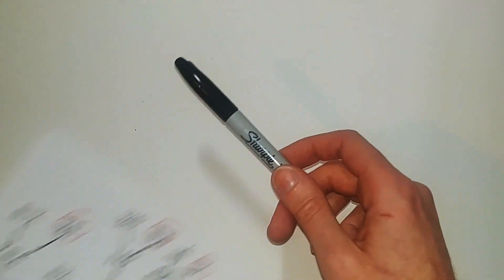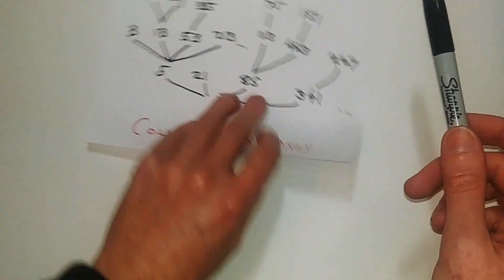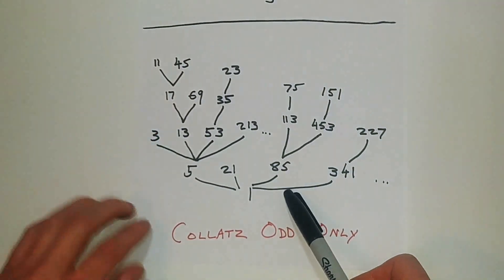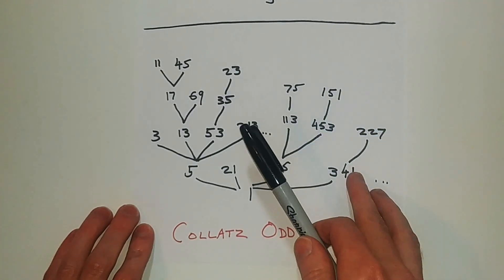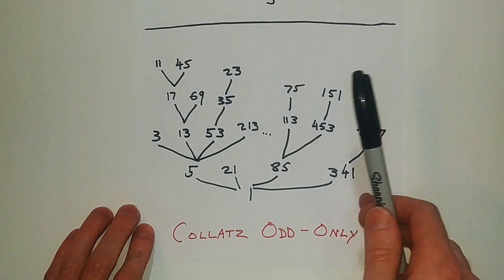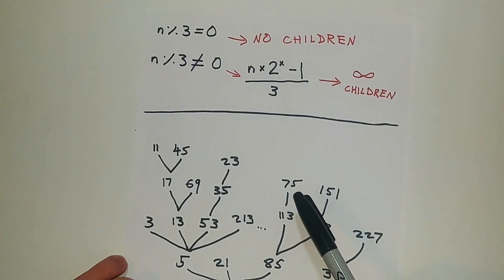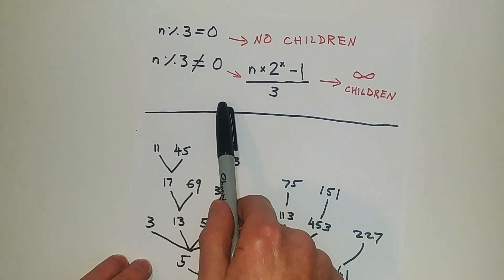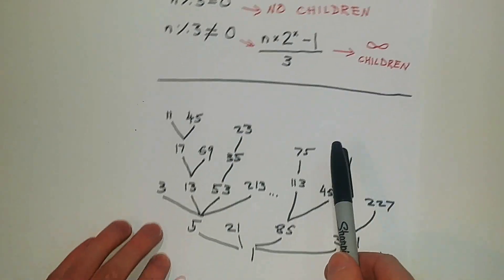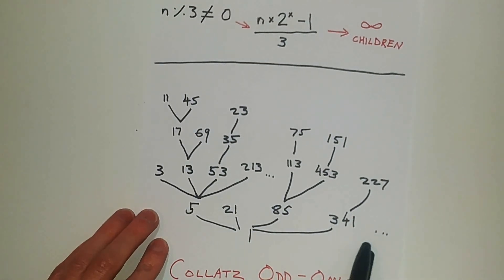So if we take out all the even numbers and get a tree like this, we can see an interesting thing. Considering what we just talked about with multiples of 3, is that if n is divisible by 3, it'll have no children. If n is not divisible by 3, it will actually have infinite children.